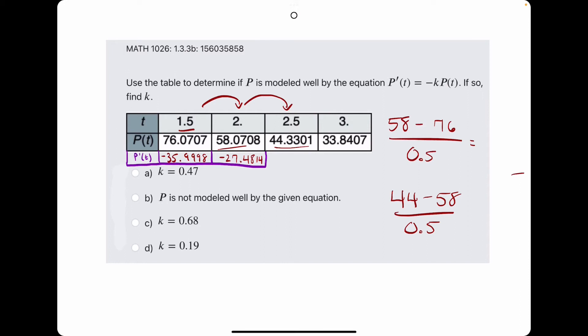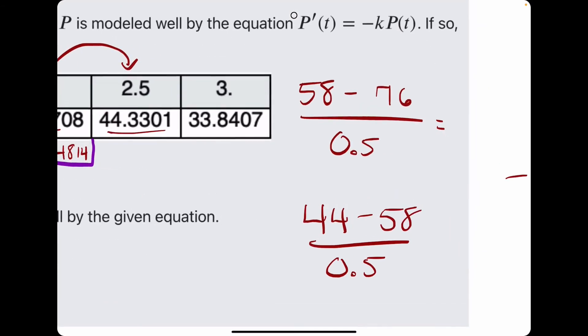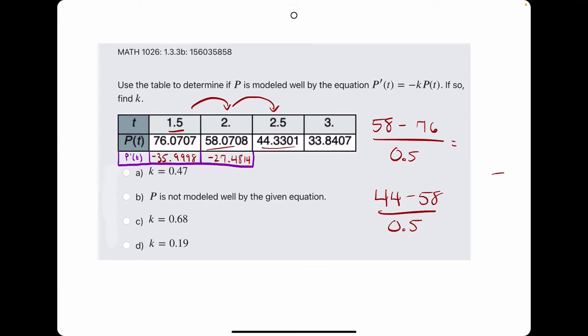So at this point, that's the only difference in the processes. It's like finding the slope between two points when the difference in t values is something other than 1. In this case, it was 0.5.